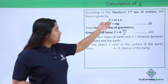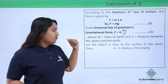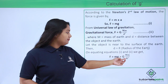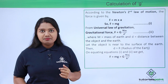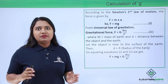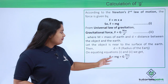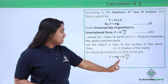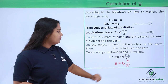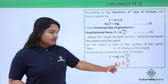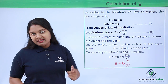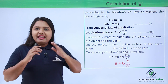On equating these two expressions for the same force, we get mg equals GMm divided by r squared. Here, small m on both sides cancels out — the mass of the object cancels — and we are left with the formula: small g, the acceleration due to gravity, equals GM divided by r squared.